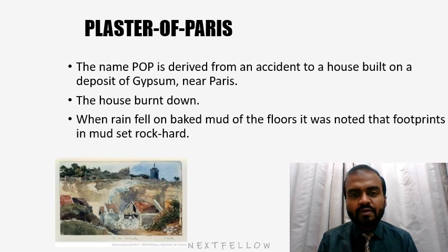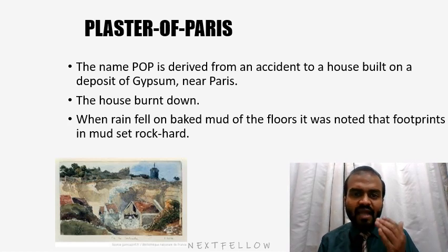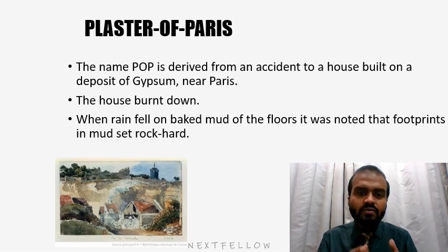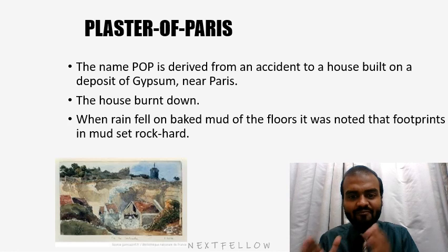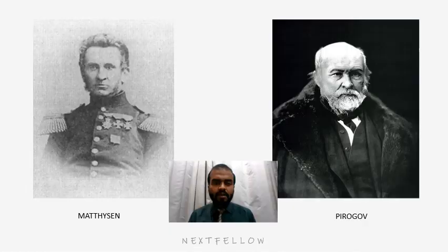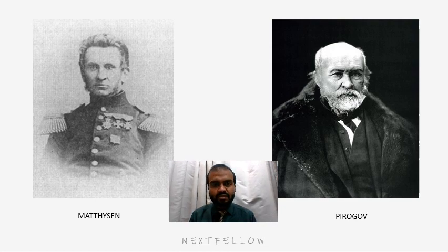There is a very interesting story as to how the name Plaster of Paris came through. The name Plaster of Paris is derived from an accident to a house built on a deposit of gypsum near Paris. The house was burned down and when rain fell on it, there was baked mud on the floor which was noticed as footprints found on it. Plaster of Paris was first introduced by Pirogov from Russia and it was brought into use by Matheson, a Dutch military surgeon.